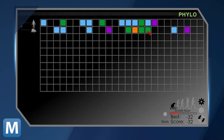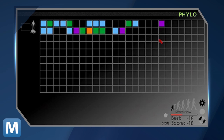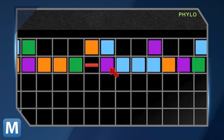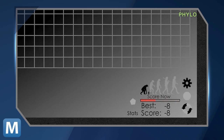Phylo is all about aligning DNA sequences. DNA is constituted of four types of nucleotides, each represented by a different color. Your score depends on how you arrange the nucleotides. The goal of the game is to maximize the matches and minimize the mismatches. Matches are two of the same color. Gaps, also called mutations, are the spaces between nucleotides. The way you arrange the nucleotides determines your score, which goes into Phylo's database.